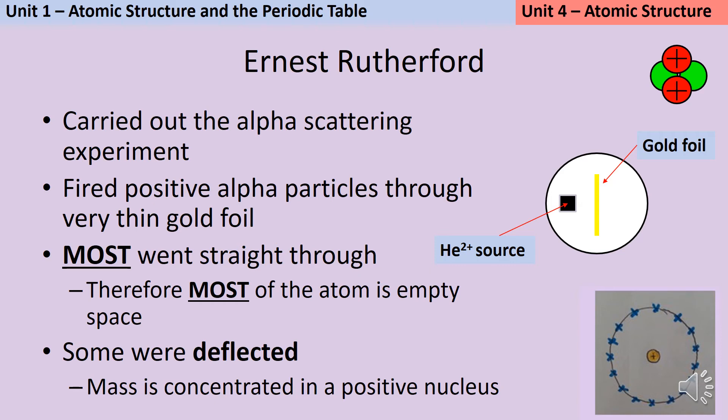Rutherford, Geiger and Marston carried out what's known as the alpha scattering experiment. Alpha particles are made from two protons and two neutrons, so they're exactly the same thing as a helium nucleus. They took an alpha source and fired those alpha particles at a very thin piece of gold foil.